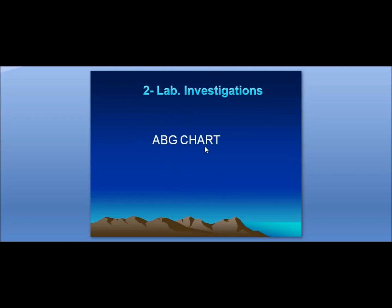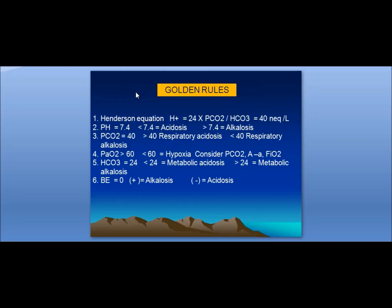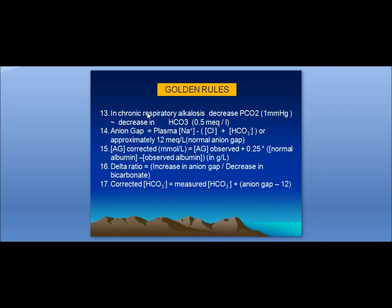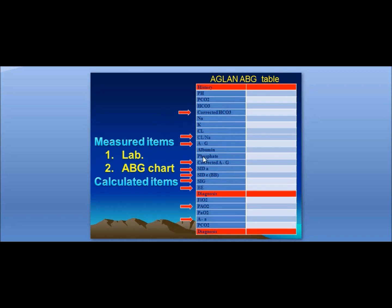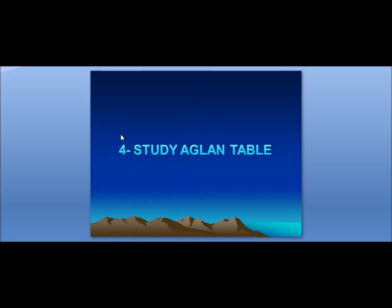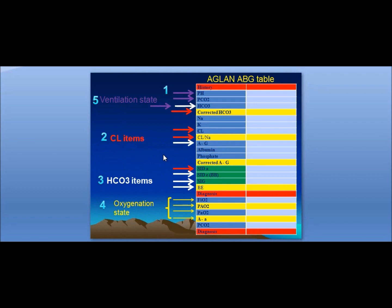After reviewing the ABG chart values, for the calculations of the calculated items, don't forget the formulas and equations — I have collected them in the form of golden rules across four slides. You should know these by heart. Number three: look at the AGLAM table and fill the spaces. These spaces are two categories: the measured items taken from lab investigations and the ABG chart, and the calculated items, which must be calculated before starting the AGLAM ABG table.